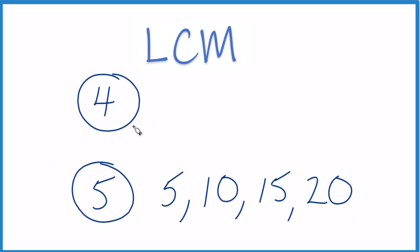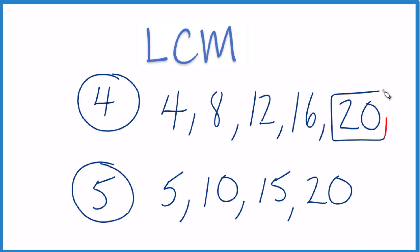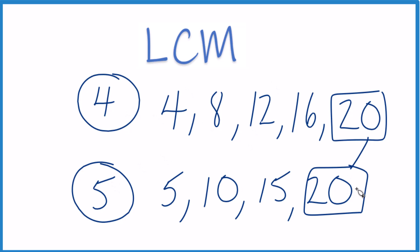So let's do 4. 4 plus 4 is 8. 8 plus 4 is 12. 12 plus 4 is 16. And 16 plus 4 is 20. And there it is — this is the least common multiple. It's common between 4 and 5, and it's the smallest number that both of these divide evenly into.